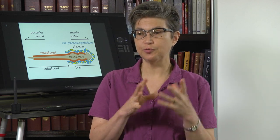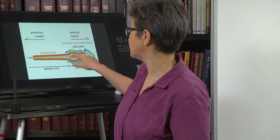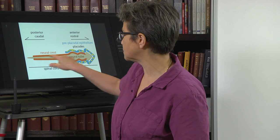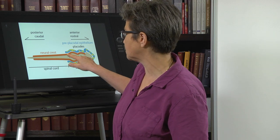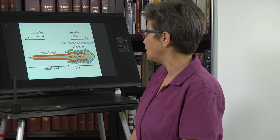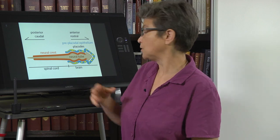By the end of the fourth week, we have a neural tube. That neural tube is not simply a plain tube — it has swellings where the brain is going to be and where the spinal cord is going to be. We're going to talk a lot more about those swellings. They're called vesicles.